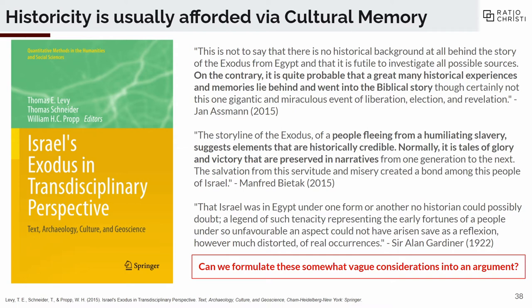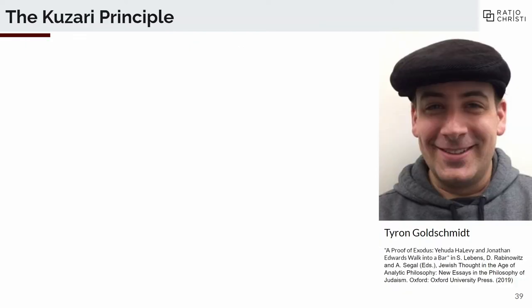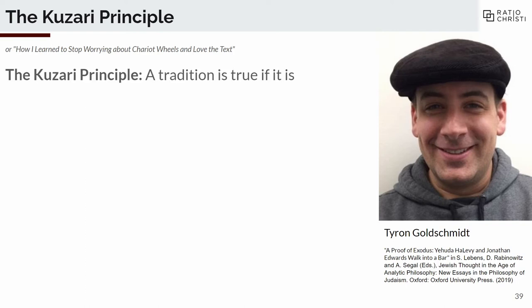Is there a way we can formulate these vague considerations into something more precise? That's what this guy has done. His name is Tyron Goldschmidt. He is a philosopher — he doesn't do archaeology, history, or textual analysis — but he focuses specifically on philosophy of epistemology. This is coming out in a book pretty soon. He's developed what's called the Kuzari principle. It's a form of what's called the principle of testimony. In philosophy, specifically epistemology, there's this problem where the overwhelming majority of human knowledge is mediated to us not through evidence or experience, but by other people telling us stuff and testifying things to us.